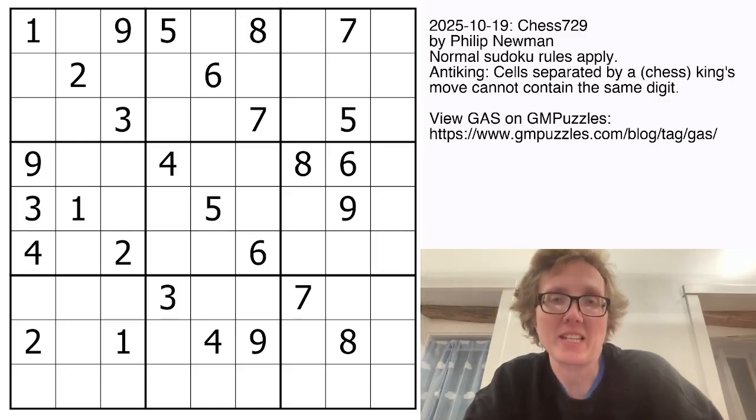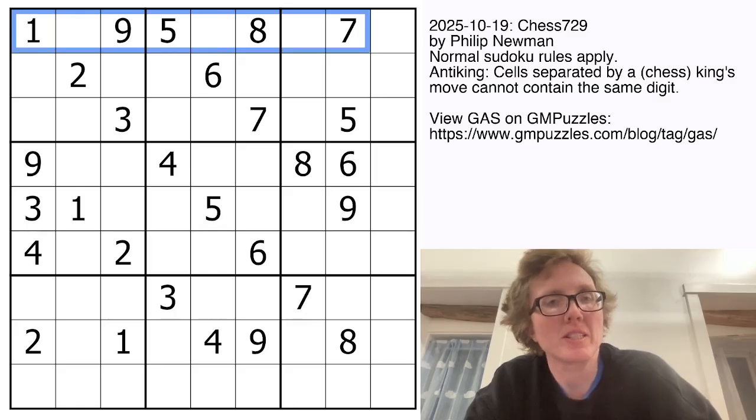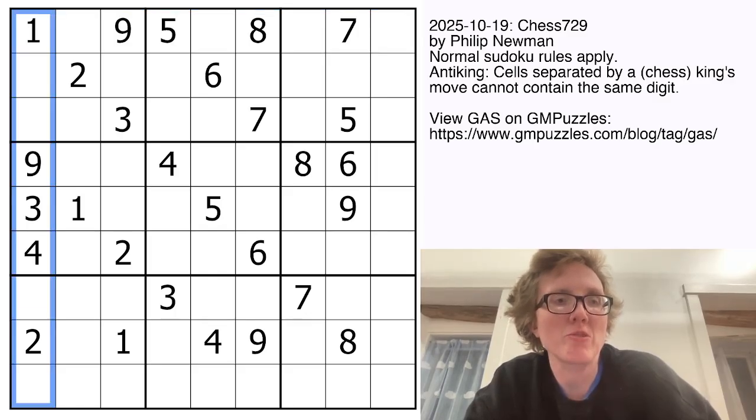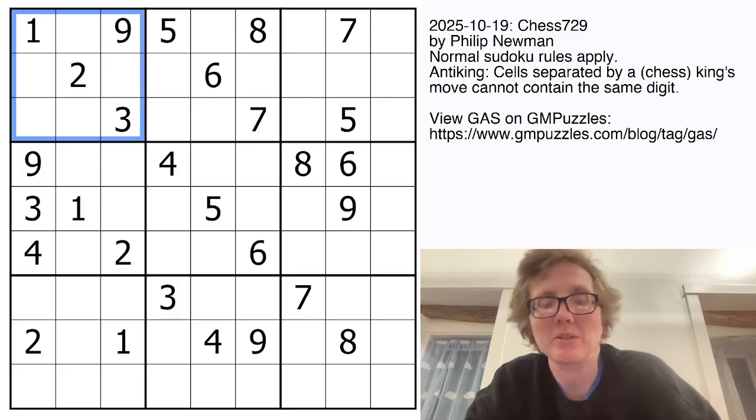This is an anti-king sudoku, and that means we have normal sudoku rules, so we're placing the digits 1 through 9, once each, in each row, each column, and each outlined 3x3 region.